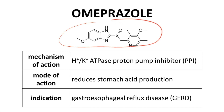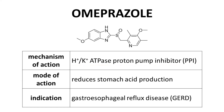Here is the structure of omeprazole. The mechanism of action of omeprazole is inhibition of the hydrogen potassium ATPase proton pump. These kinds of drugs are often called PPIs. The mode of action is reduction in stomach acid production — the same mode of action we saw with cimetidine. Both cimetidine and omeprazole have the same mode of action, but each drug achieves that mode of action through a different mechanism of action by acting on a different target.